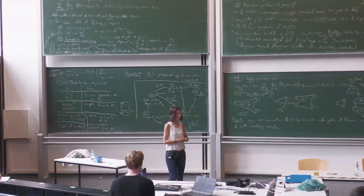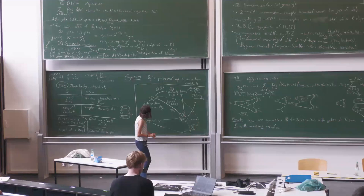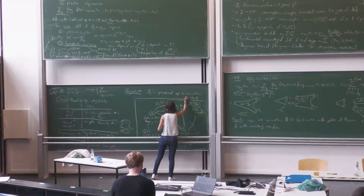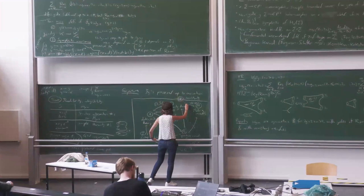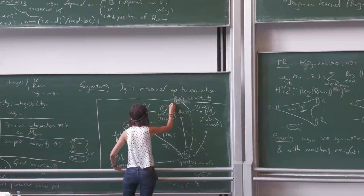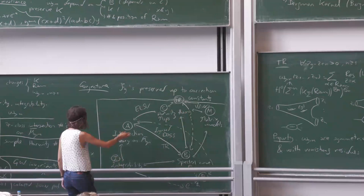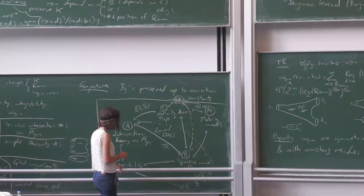Question: where does free probability fit in the picture? The speaker says they had intended to place it somewhere near combinatorics and matrix models, since it is related to both. There is already a part that is worked out. Whether free probability would connect interestingly with integrability or resurgence — for example enabling analytic studies — is an open and interesting question.